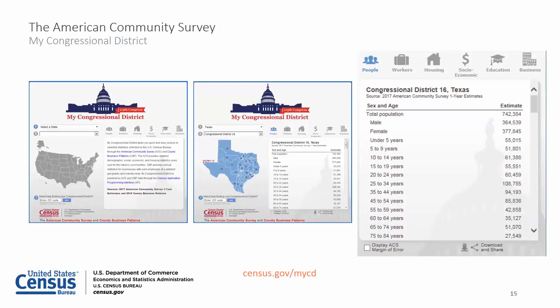My Congressional District, commonly referred to as MyCD, gives you quick and easy access to selected statistics from the American Community Survey and County Business Patterns. County Business Patterns is an annual series that provides sub-national economic data by industry, including number of establishments, employment during the week of March 12th, first quarter payroll and annual payroll. Use this tool for information on congressional districts — statistics on people, workers, housing, social, socioeconomic, education and business. You can also embed the MyCD application on your website for users to use.